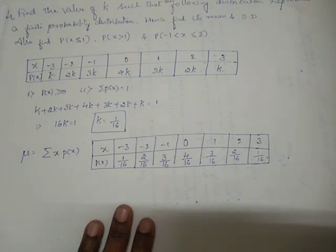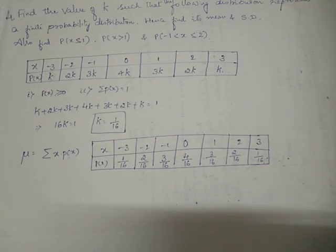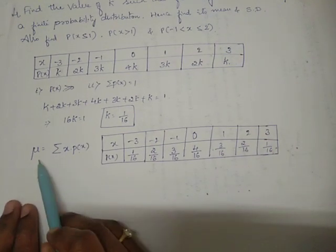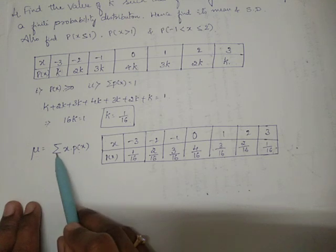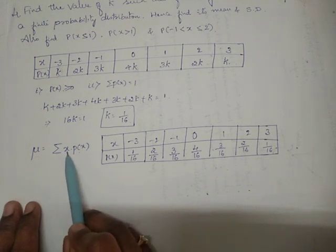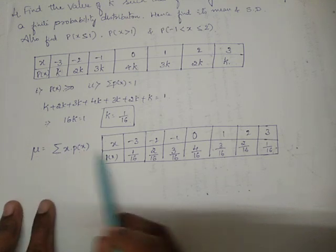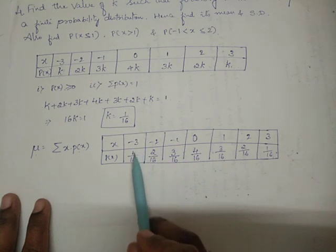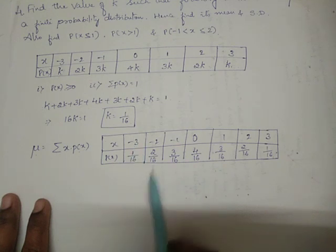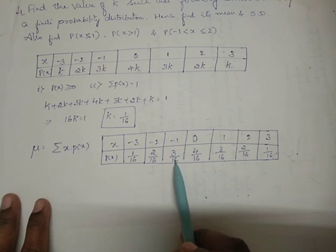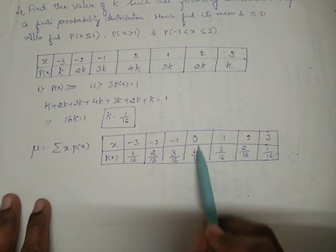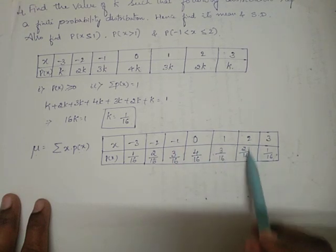Now μ = summation of x · P(X), so we multiply each x value by its corresponding P(X) and add all those products together.